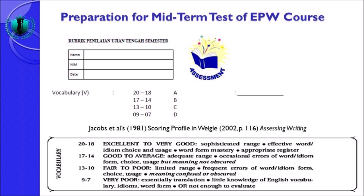Nilai good to average: adequate range, occasional errors of word or idiom form, choice, usage, but meaning not obscured — ada rentangan kosa kata yang bervariasi tapi tidak begitu menarik, serta ada beberapa kesalahan kosa kata atau idiom tapi maknanya tidak terlalu sulit dipahami. Yang ketiga fair to poor: limited range — pilihan kosa katanya terbatas, banyak pengulangan. Frequent errors of word, idiom form, choice, usage — cukup sering ada kesalahan. Meaning confused or obscured — maknanya membingungkan, agak sedikit susah dipahami.